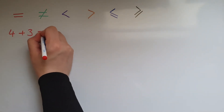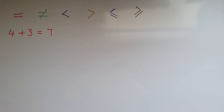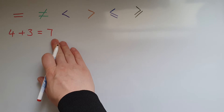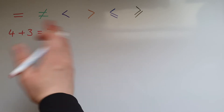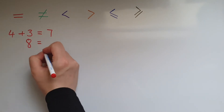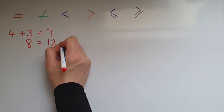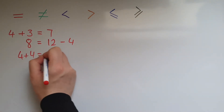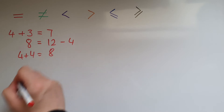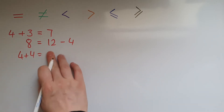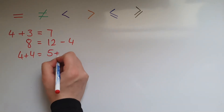For example, 4 add 3 is equal to 7 — what you have on this side is equal to what you have on the other side of the equation. Further examples: 8 is equal to 12 take away 4, and 4 add 4 is equal to 8, or 4 add 4 is equal to 5 add 3.